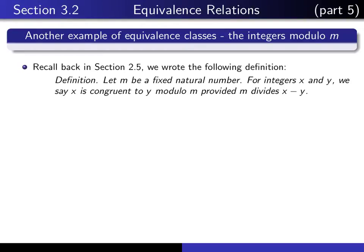Recall from an earlier section the following definition: if m is a fixed natural number and x and y are any two integers, we say x is congruent to y modulo m, provided x minus y is divisible by m.